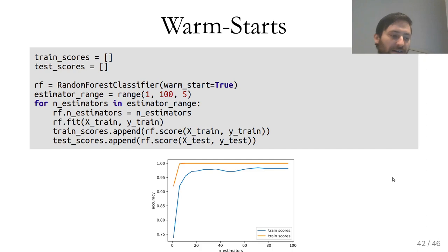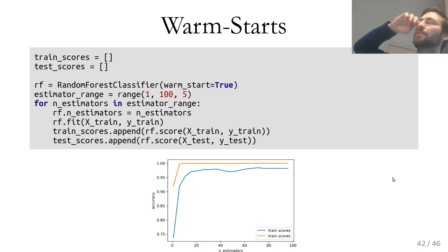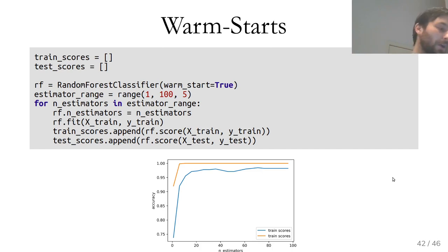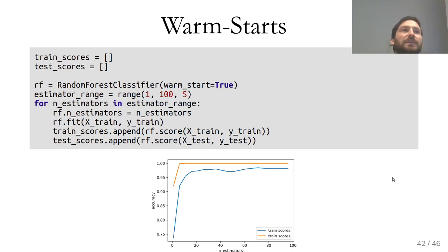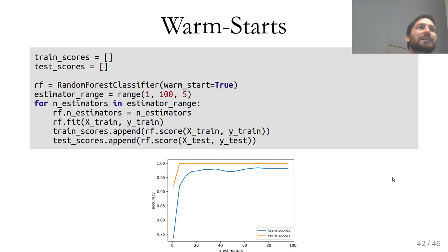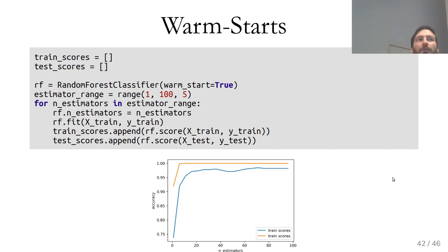One way to efficiently search for the number of trees is warm starting. Warm starting is available for many scikit-learn models and allows you to change a hyperparameter and retrain, with training restarting where you stopped. Using warm_start=True and starting with one estimator, adding five each step: without warm starting, running with 95 trees then 100 trees restarts from scratch each time. With warm starting, it just adds 5 more trees to the existing 95, allowing quick scanning over how many trees are needed.